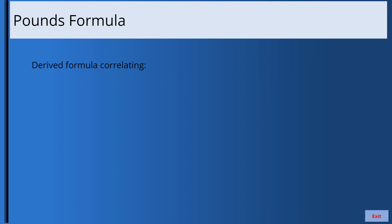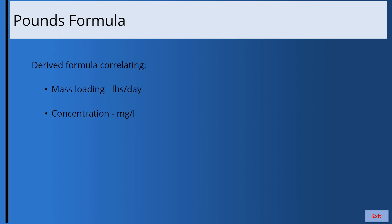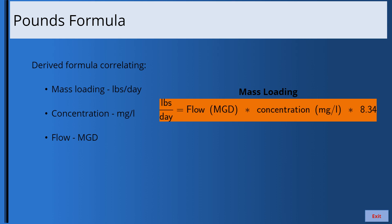The pounds formula is the most widely used formula in wastewater treatment calculations. It correlates mass loading in pounds per day. The concentration must be expressed in milligrams per liter — if the concentration is in a different unit, such as a percentage, the formula will not work. The flow needs to be in MGD. The formula is: mass loading in pounds per day equals flow times concentration times 8.34.